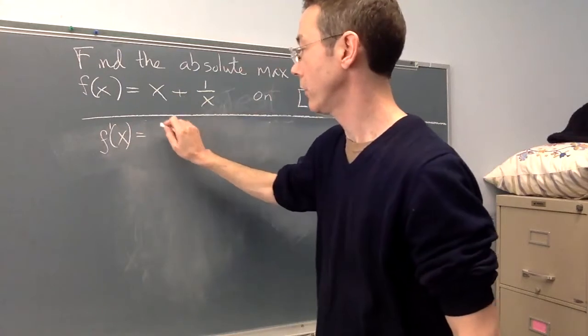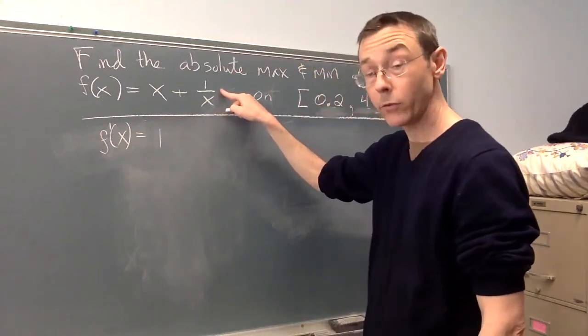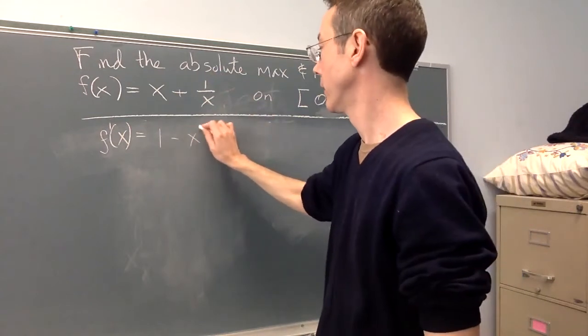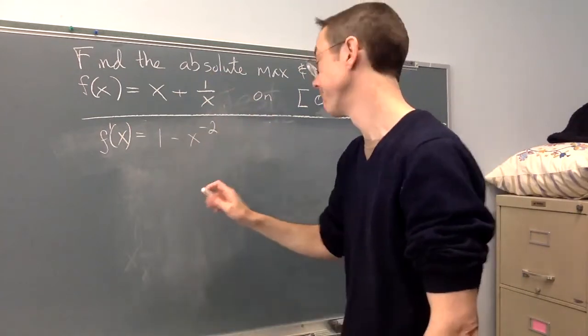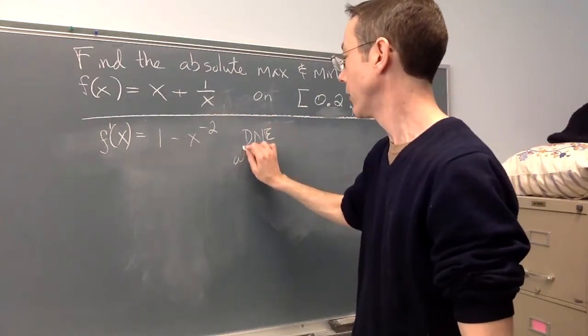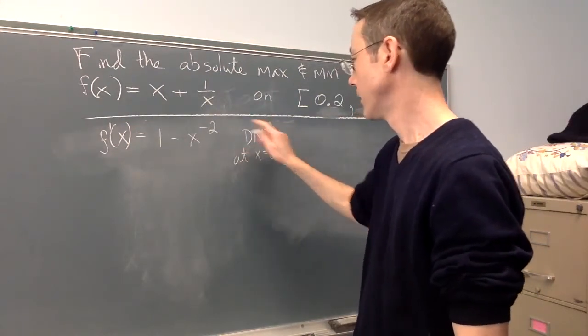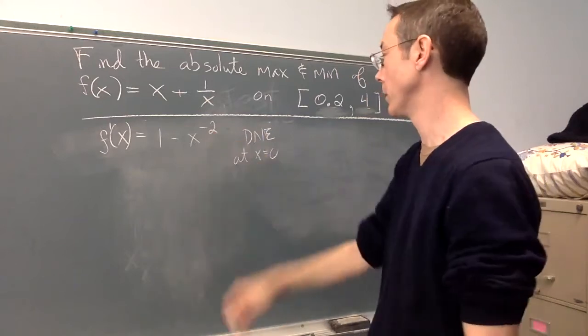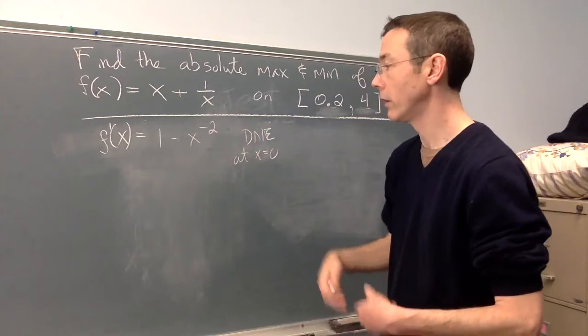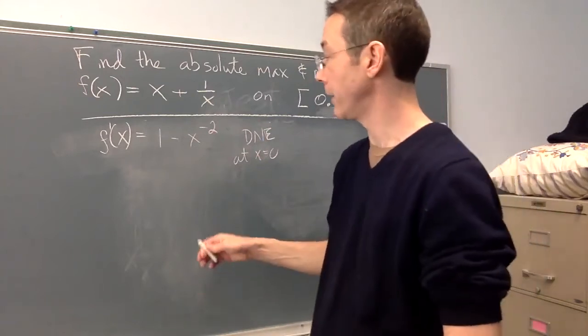So the derivative of x is 1. 1 over x we'll view as x^(-1), so we get -x^(-2). That does not exist at x = 0. This is 1/x^2, you can't divide by 0. So we make a note that x = 0 is potentially something we need to consider as a critical value.